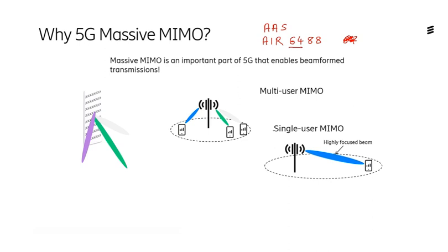Massive MIMO is sort of two things, really. It's the ability to do beamforming and also the ability to support single-user MIMO and also multi-user MIMO. With single-user MIMO, a beam can be created to an individual UE, and at mid-band and low-band, multiple beams can actually be supported at the same time to different UEs in the same TTI, the same transmit time interval. The individual beams can also support more than one layer of communications, up to four-by-four layers of single-user MIMO in each beam.